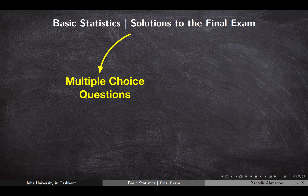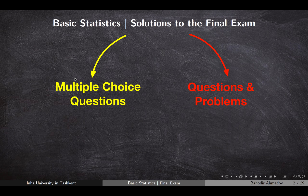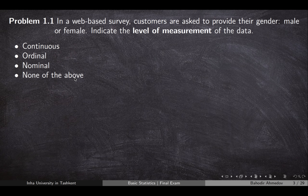In this video we're going to discuss the solutions to the final exam on basic statistics. The exam contains two parts. The first part contains 10 multiple choice questions and the second part contains problems which we need to solve. I'm going to show you the question description with the options. You need to press pause in order to try to answer by yourself, then I'm going to show you the answer and explain it.